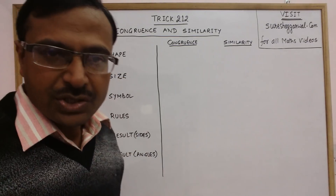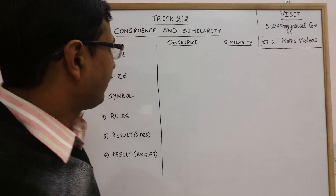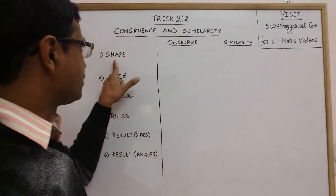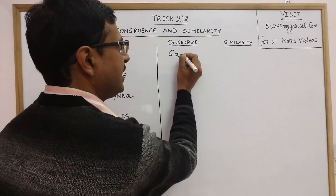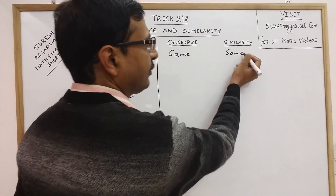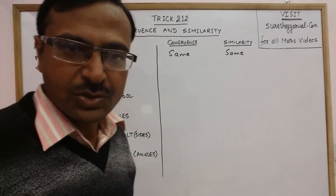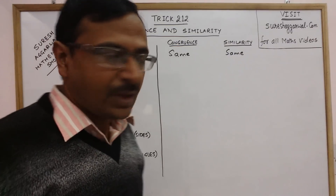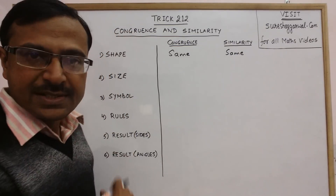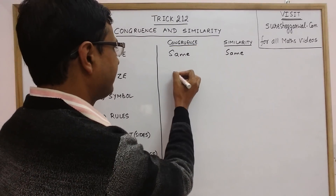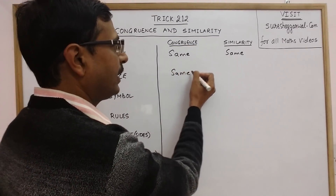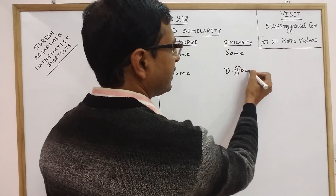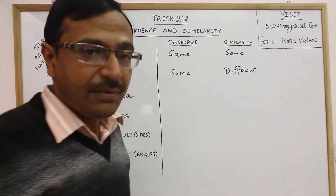When we talk of the shape of the triangle, whether it is a congruent triangle or a similar triangle, the shape is the same. So this is a point of agreement between these two types of triangles — the shape is same. But when you consider the size, congruent triangles have the same size, whereas in the case of similar triangles, they have different sizes.